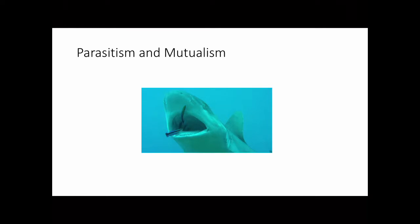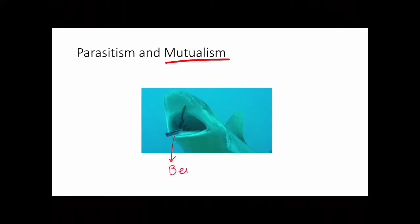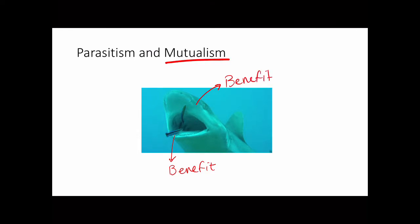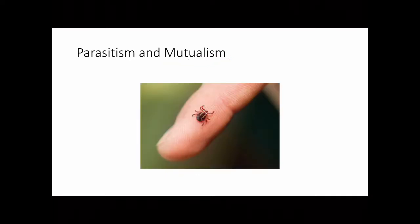Okay, so this first one is an example of mutualism. We have a small fish feeding off lice and leftover food inside the shark's mouth — so the small fish benefits. The shark in this case is getting its mouth cleaned, removing things that might cause disease and bad health, so the shark is also benefiting. Therefore we have mutualism.